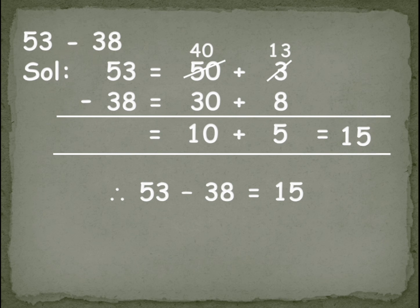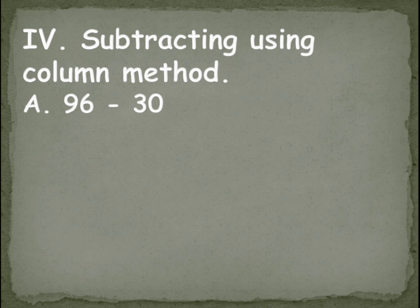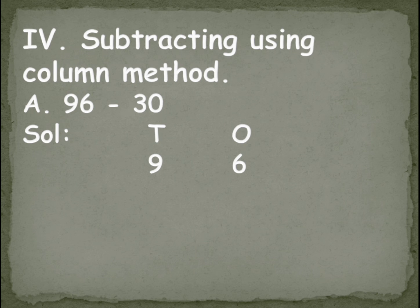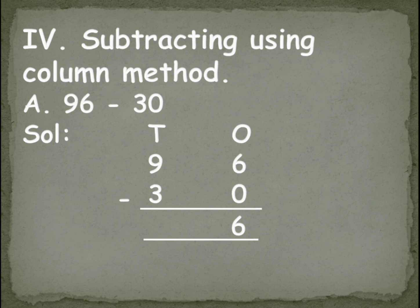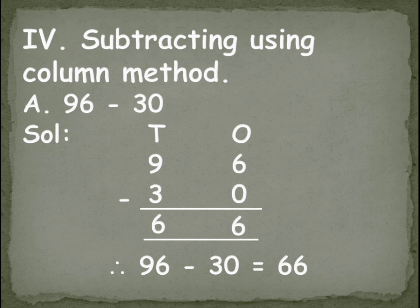Now subtraction using column method: 96 minus 30. Make the columns Tens and Ones. 96: 9 under T, 6 under O. 30: 3 under T, 0 under O. Place minus. Start from ones: 6 minus 0 gives 6. Tens: 9 minus 3 — count from 3 up to 9, that's 6 fingers — write 6. So the answer is 66. 96 minus 30 is equal to 66. This is without regrouping.